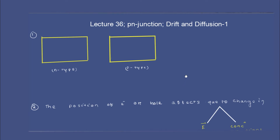Hi, welcome to GER GATE EAC lecture. We are in lecture number 36. Now this is the second module. We have completed our first module, basic semiconductor physics. Now this is our second module, that is P-N junction. This is the first chapter of P-N junction, which is drift and diffusion mechanism. This is the first video lecture for drift and diffusion mechanism.